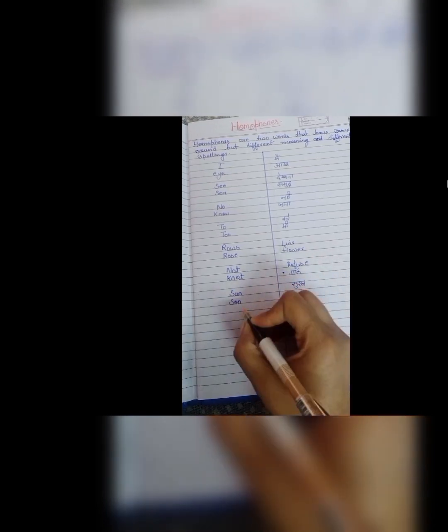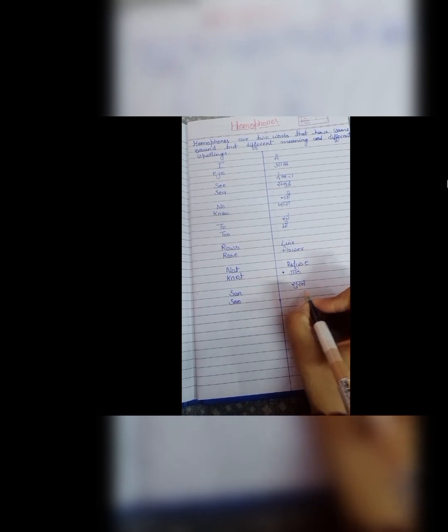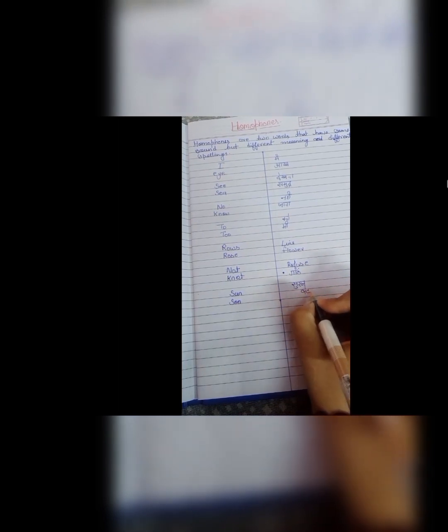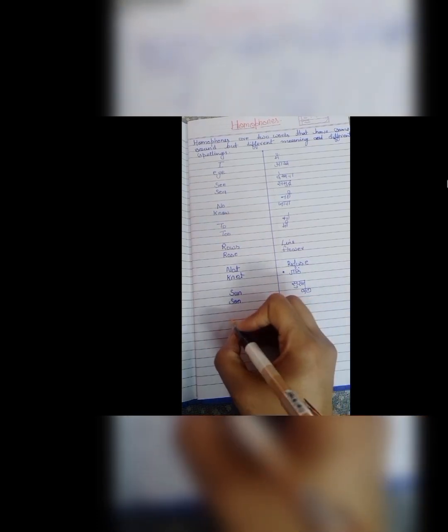Next is sun and son. S, U, N, sun. Iska meaning hoota hai suraj. And S, O, N, son. Means beta. The male child.